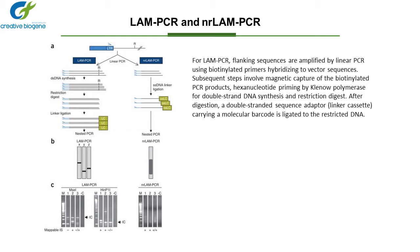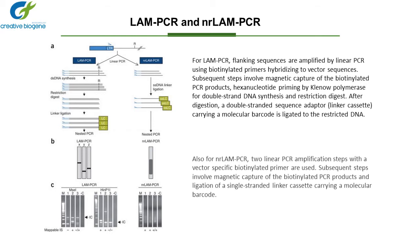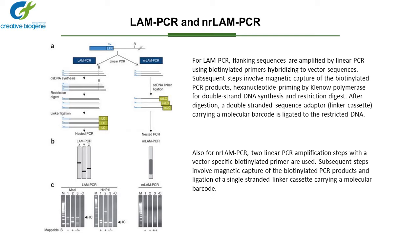After digestion, a double-stranded sequence adapter carrying a molecular barcode is ligated to the restricted DNA. Also for NR-LAM-PCR, two linear PCR amplification steps with a vector-specific biotinylated primer are used. Subsequent steps involve magnetic capture of the biotinylated PCR products and ligation of a single-stranded linker cassette carrying a molecular barcode.